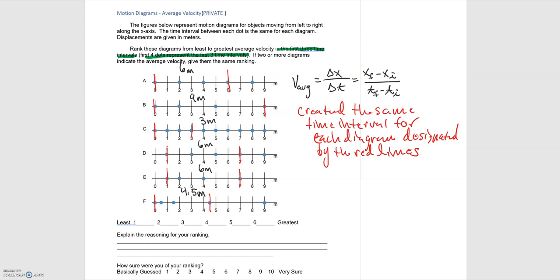So now that we've determined the displacements for each, we can rank them. Starting with the smallest, we have C. Moving on, we have F, which is 4.5. Then we have a whole lot of sixes, so A, D, and E. Then we have B to round everything out at 9 meters.